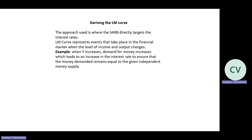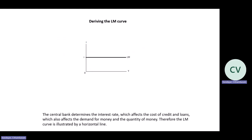The ILM curve is not influenced by the level of income and output — it is determined by the central bank. Therefore, the ILM curve is a perfectly horizontal line. At interest rate R, your ILM curve is perfectly horizontal, clearly indicating it is not influenced by the level of income and output. It is the central bank that determines the interest rates, which affects the cost of credit and loans, and also affects the demand for money and the quantity of money. Therefore, the ILM curve is illustrated by a horizontal line.